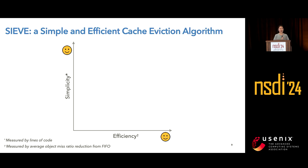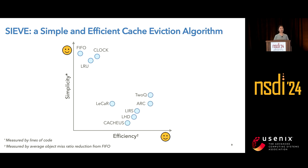We put simplicity and efficiency into two axes and see where the state-of-the-art algorithms stand. We can see a group of algorithms such as FIFO, LRU, and clock — they are very simple and easy to implement, but their efficiency is not very good. Another group of algorithms has much better efficiency, but they are way more complex. So is it possible to achieve both high efficiency and simplicity? Here we introduce SIEVE, a new cache eviction algorithm specially designed for web cache. It's both simple and efficient, and also more scalable than LRU.